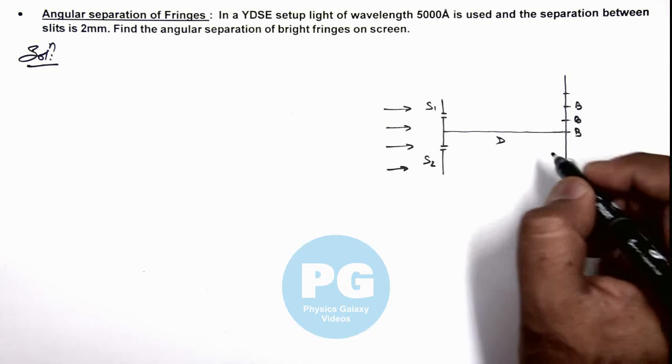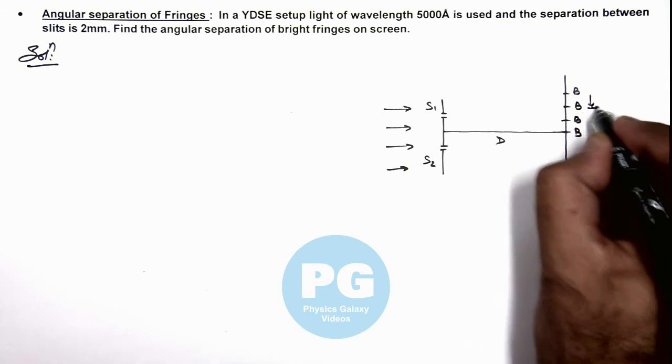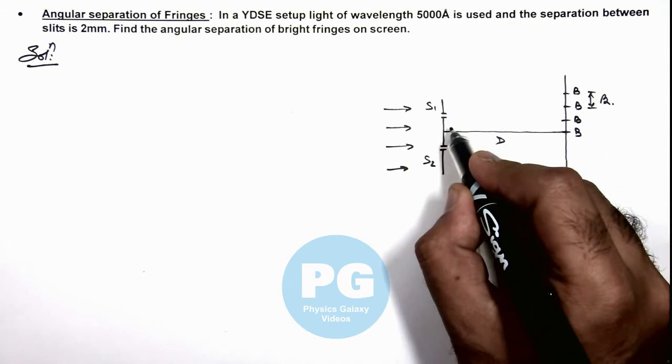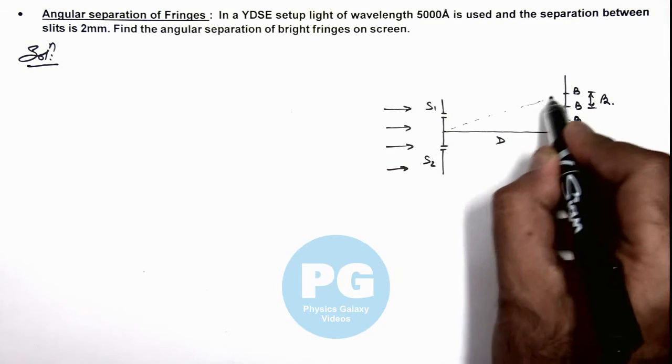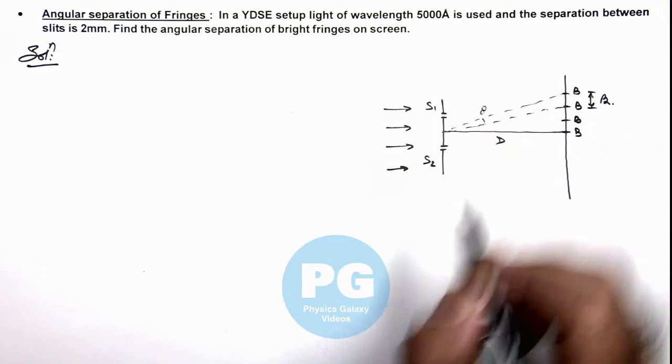So here we can see the separation between bright fringes is the fringe width, that is beta. So if we wish to calculate the angular separation between 2 adjoining bright fringes, this is the angular separation theta.